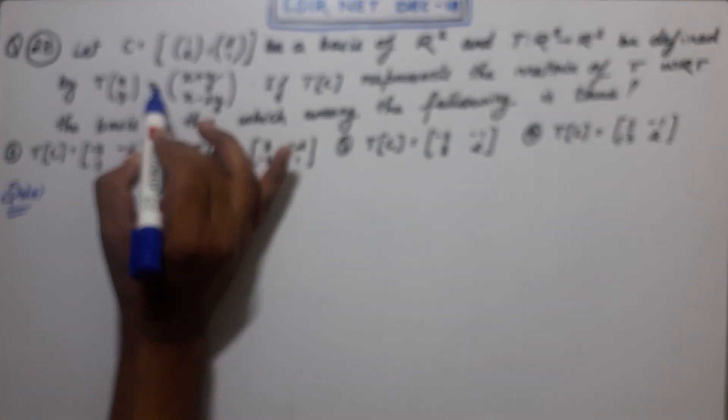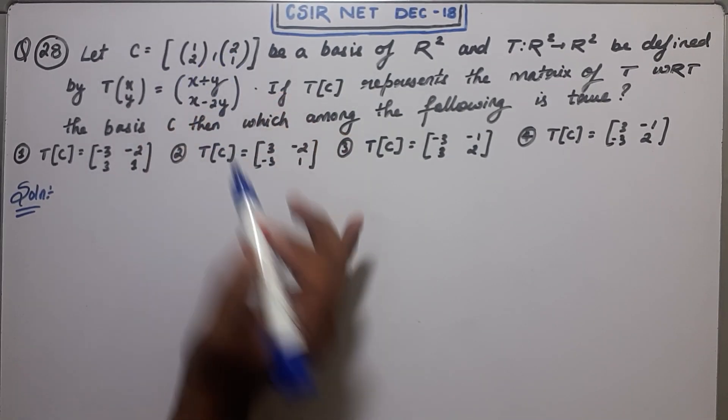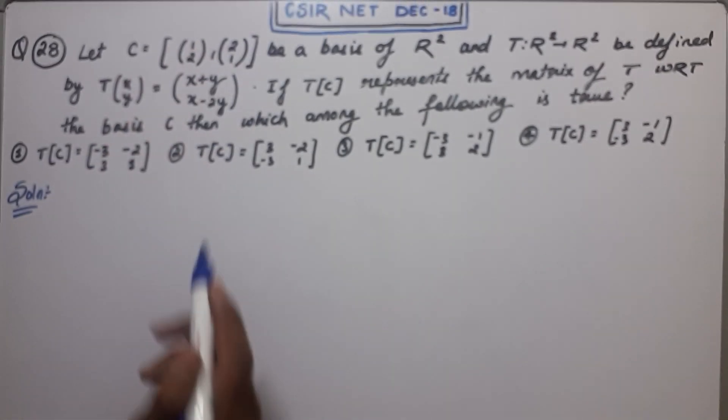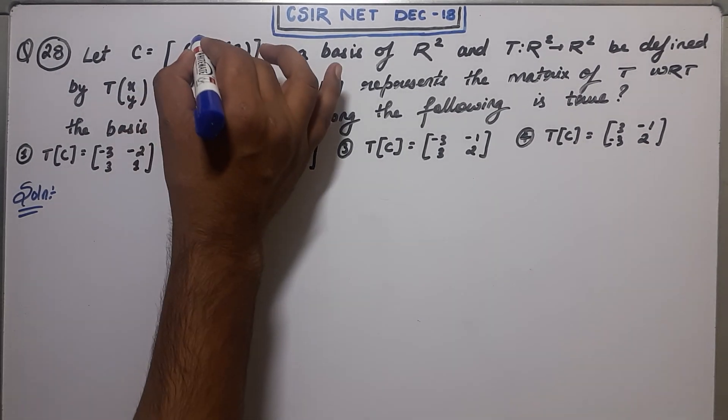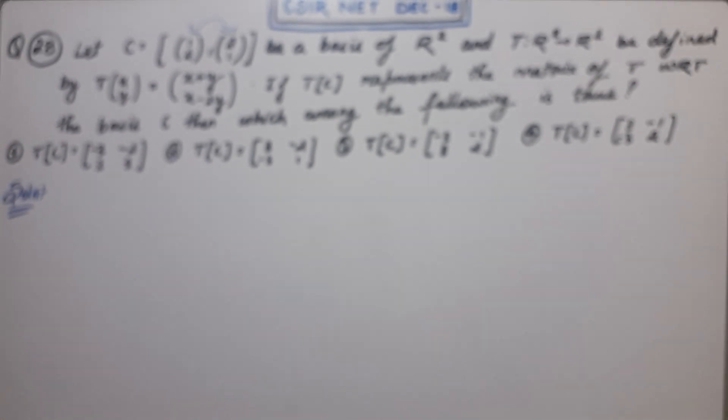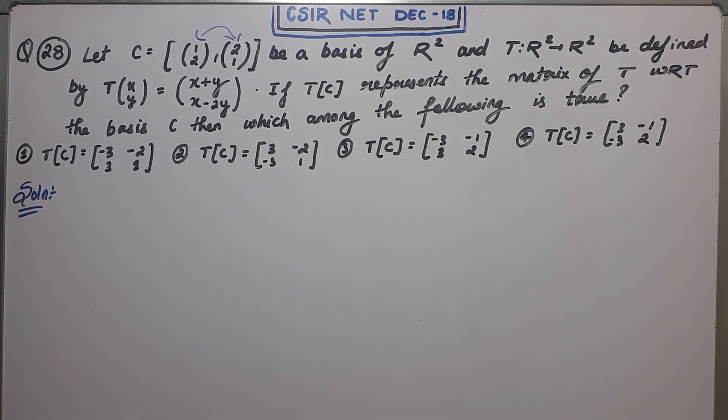Let C equal (1,2), (2,1). So we have two vectors and C is the basis of R squared. These two are the basis vectors of R squared, not R cube, sorry, R squared.